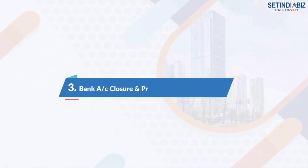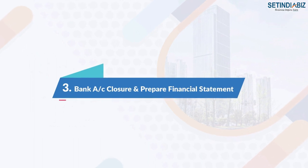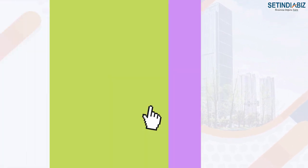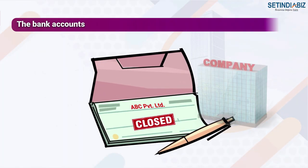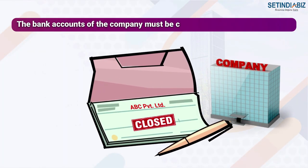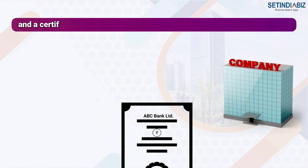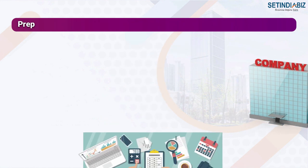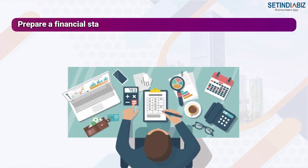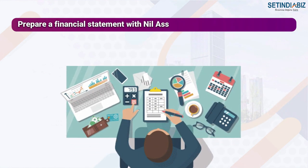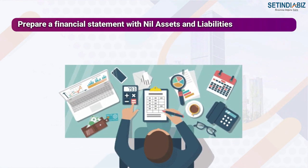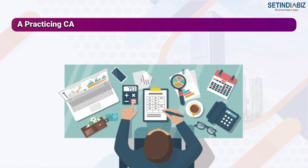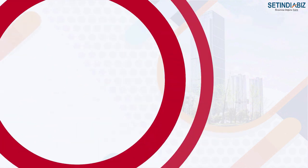Step 3: Bank account closure and prepare financial statement. The bank accounts of the company must be closed and a certificate from the banker is needed. Prepare a financial statement with nil assets and liabilities, which a practicing CA or auditor shall certify.